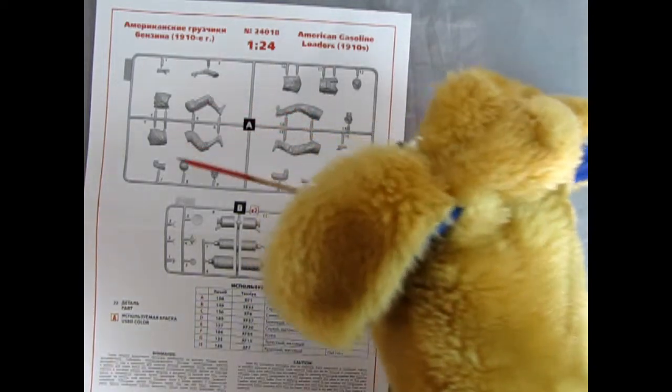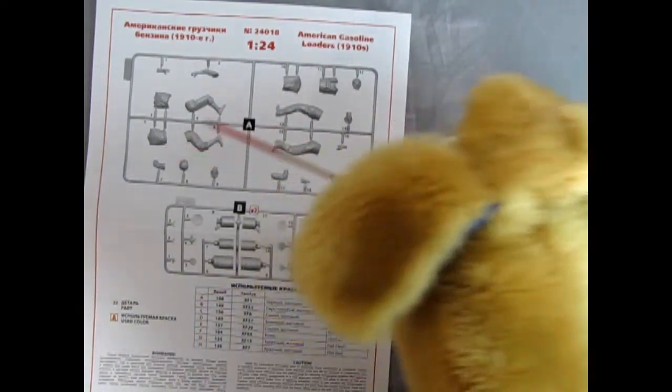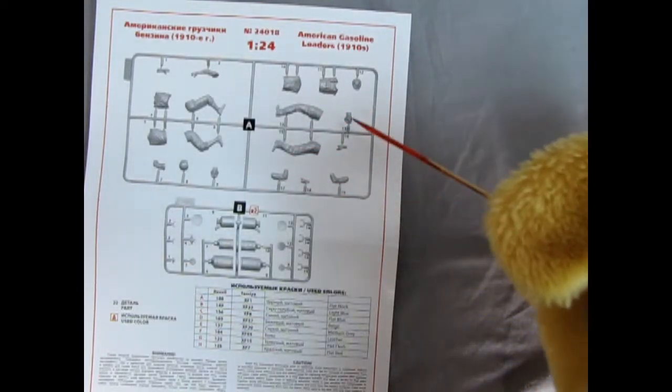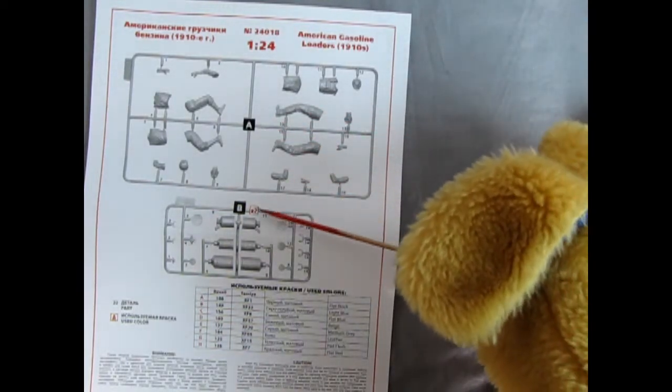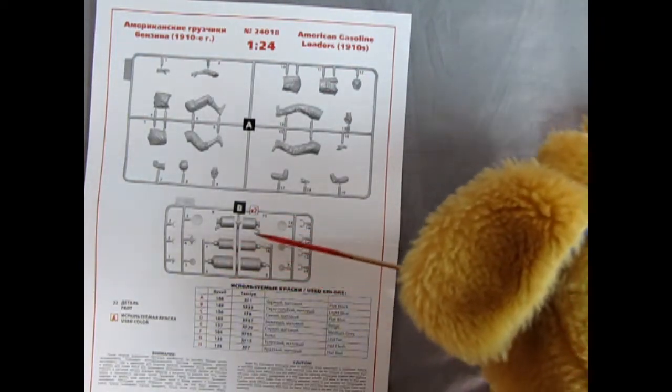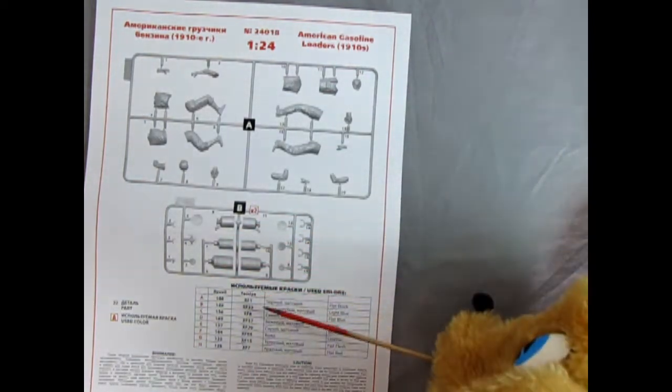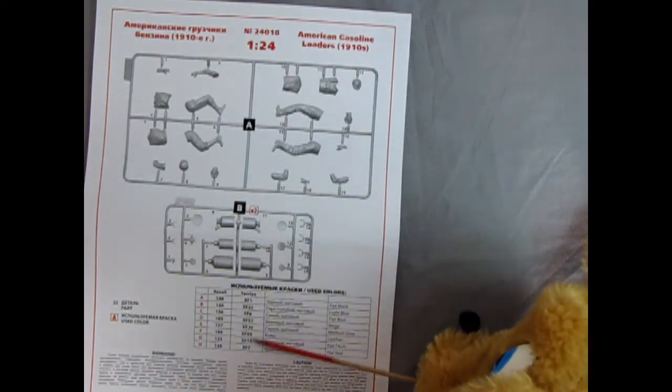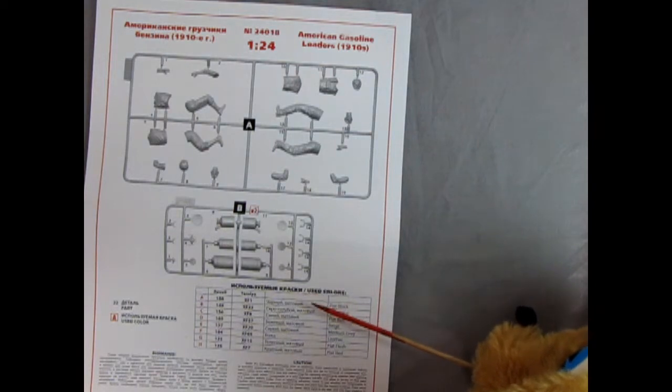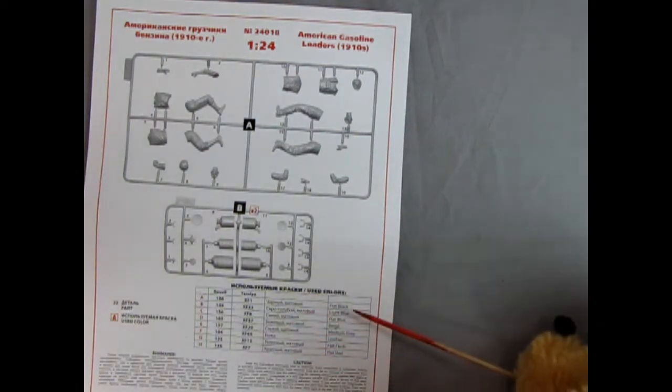Parts tree A shows the legs and the body portions of each of the men with their heads and everything else. You actually get two of B and that's all your fuel tanks of the vintage era. Down here you have paint call outs for everything. You have Revell and Tamiya, and then you've got in the Ukrainian language the different paint colors as well as what they are here in English.